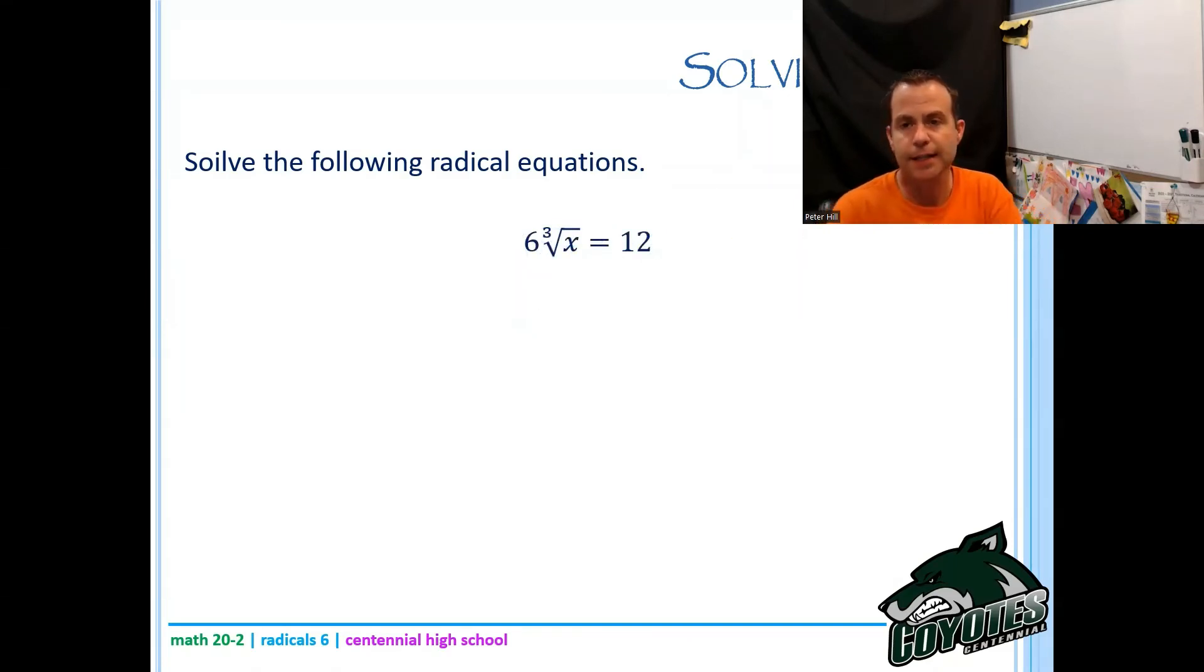Last one for today. Six times the cube root of x, again, equals 12. Again, we're going to talk restrictions. Because it's a cube root, there are no restrictions. x is a member of the reals. Now, I want to isolate for that guy. So I'm going to divide both sides by six, and that's going to give me the cube root of x equals two. Now here, I'll cube both sides. The cube root of x cubed is just x. And then two cubed is eight. So I end up with a statement that reads x equals eight.